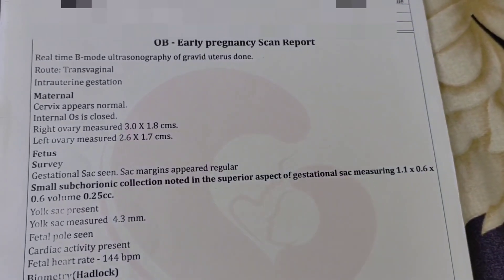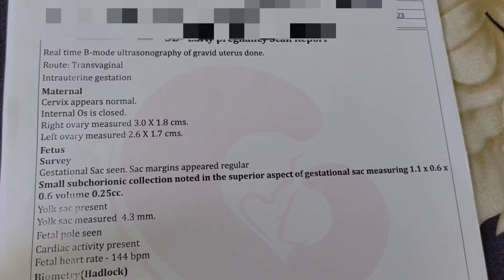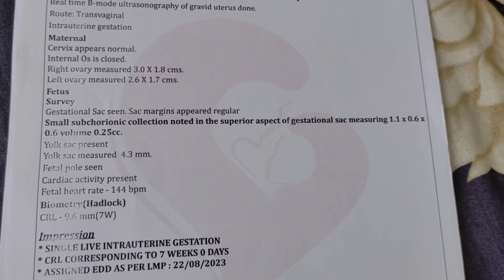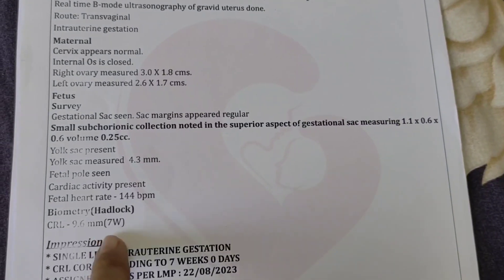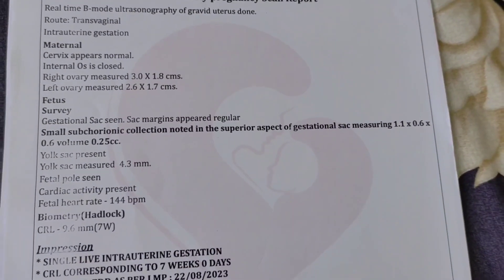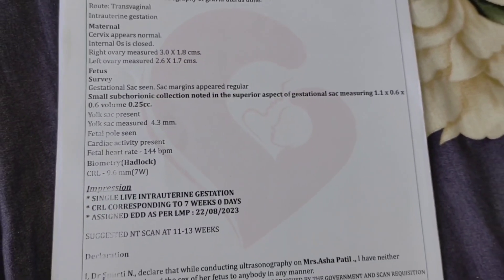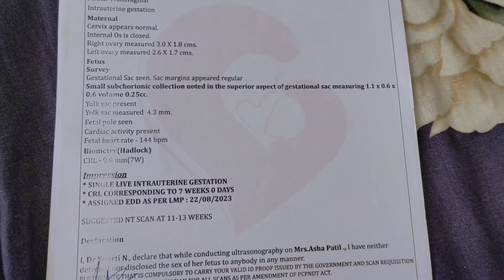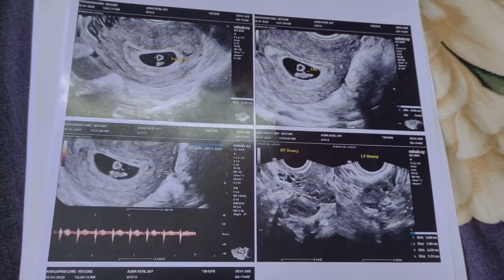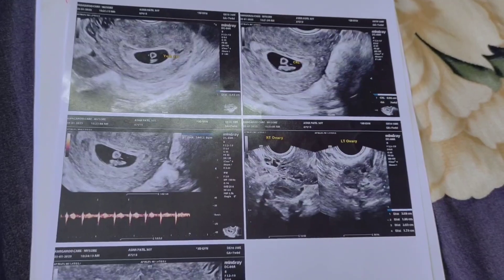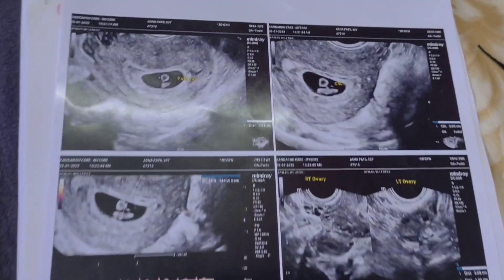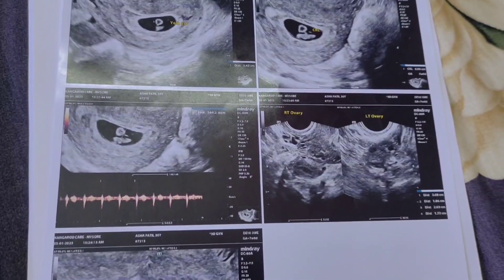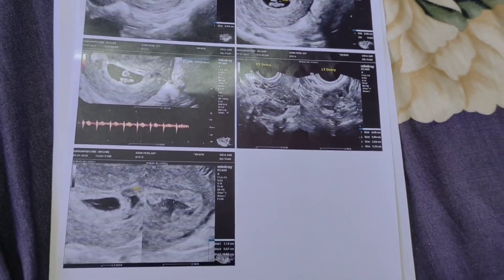I am sharing the first scan of early pregnancy. I am having a heartbeat detected. The heartbeat is about 144 bpm. At 11 to 13 weeks is the first trimester test. You can see the details on the scanning report.